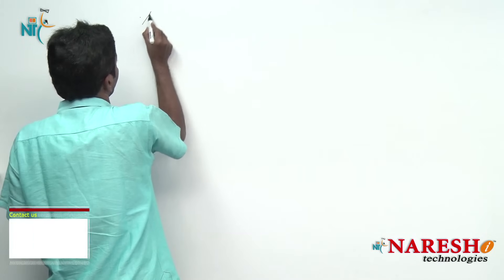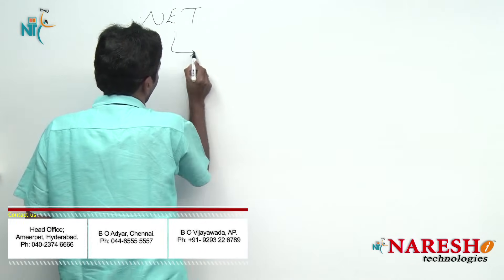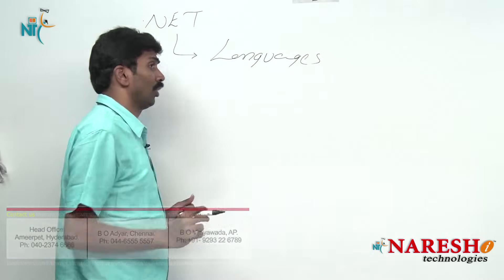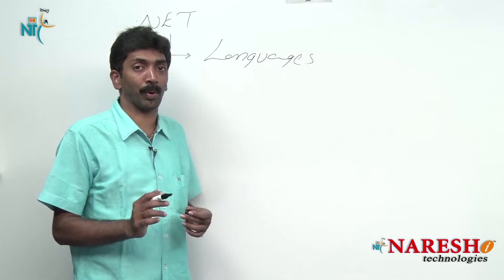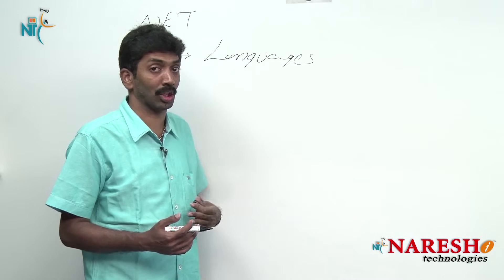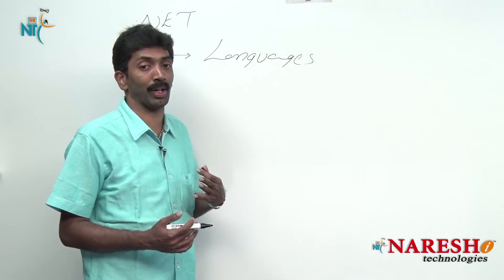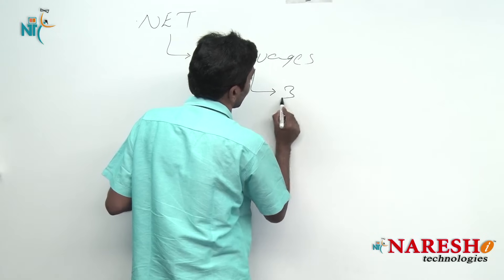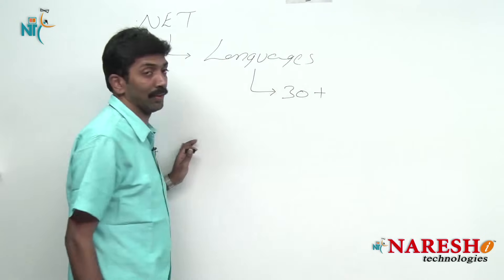Now let us understand how to develop these applications. To support development, Microsoft under .NET has provided a set of programming languages — not just one language, but many languages. Officially there are 30 plus languages in .NET.